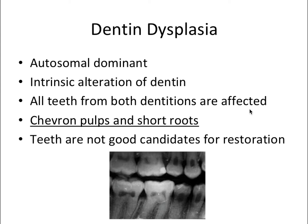Next we have dentin dysplasia, which is also an intrinsic alteration of dentin with all teeth from both dentitions affected. The presentation is a bit different: it has chevron pulps — an almost arrowhead-shaped feature — and short roots. Unfortunately, these teeth are not good candidates for restoration. The short roots create a poor crown-to-root ratio, and the chevron pulps make pulp exposure more likely when drilling interproximally.